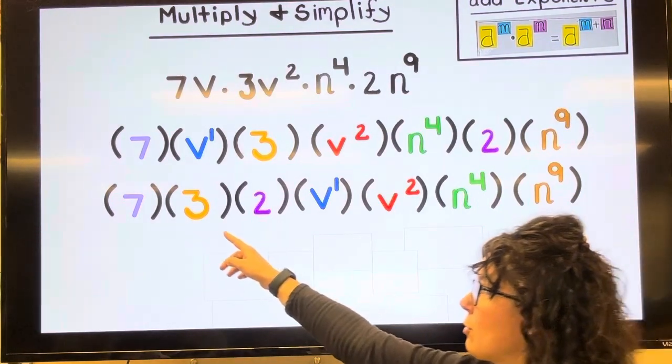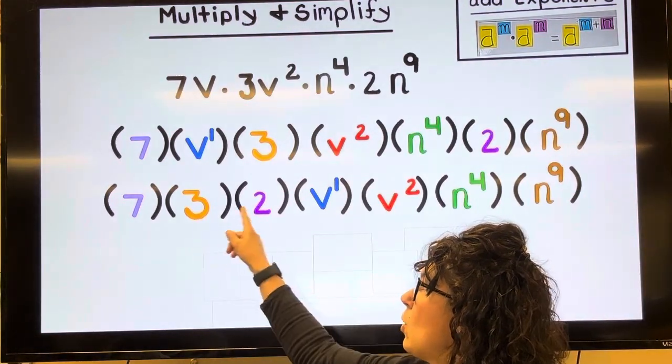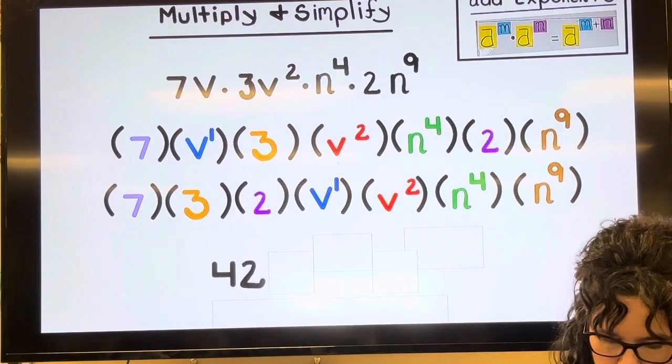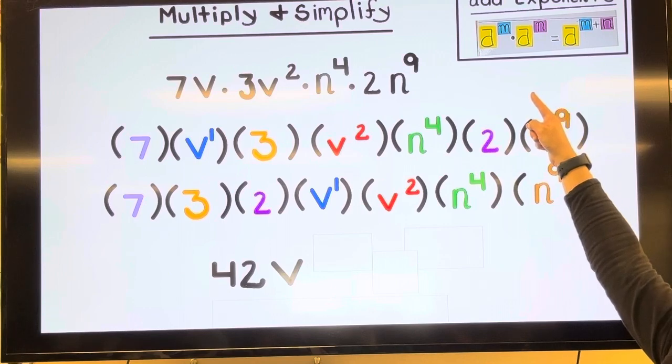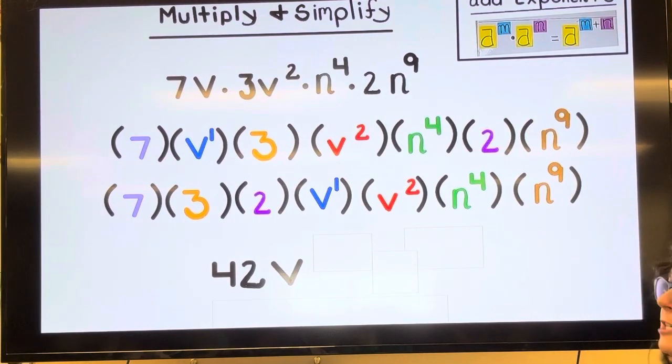7 multiplied by 3, 21 times 2 is 42. Okay, then we have V and then we have V and using this rule, when you have like bases, you add exponents.